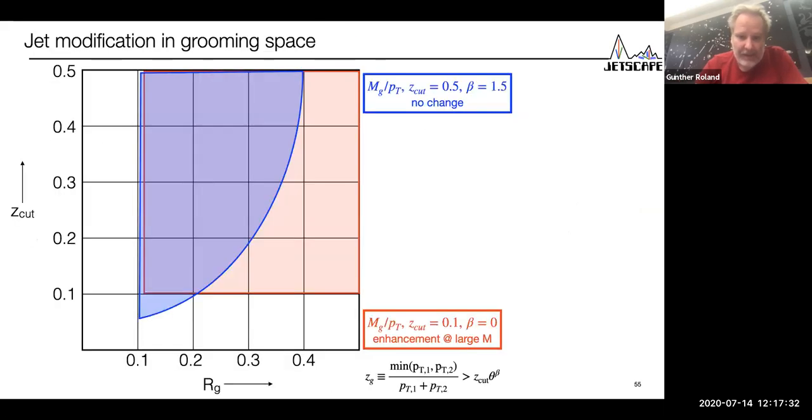Here, this is the jet mass measurement in a phase space spanned by the angle between the two jets and the minimum momentum of the contributing subjets. This is a representation that follows what Yacine has shown in the past, for example at last quark matter. If you make a flat cut in zg, you get an enhancement in large jet masses. If you focus on the core of the jet by increasing the momentum cut for larger angles, you get no change. That's a summary of what we just saw.